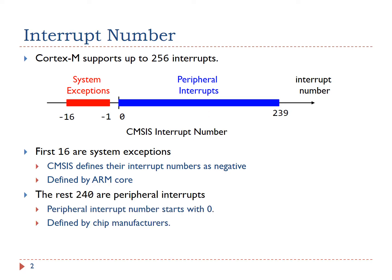The remaining 240 interrupts are peripheral interrupts, also called non-system exceptions. The peripheral interrupt number starts with zero. This number scheme allows software to easily distinguish system exceptions and peripheral interrupts. Peripheral interrupts are defined by chip manufacturers, and the total number of peripheral interrupts supported varies among chips.